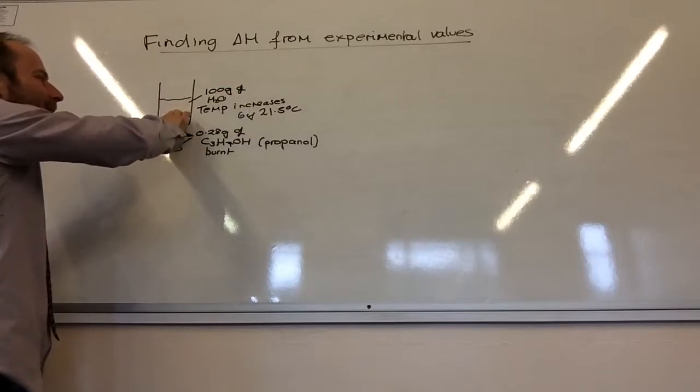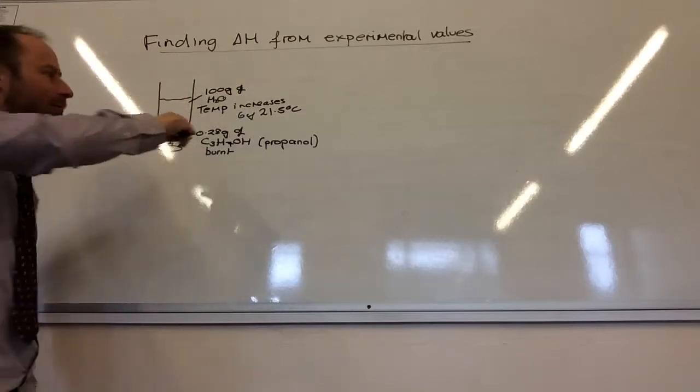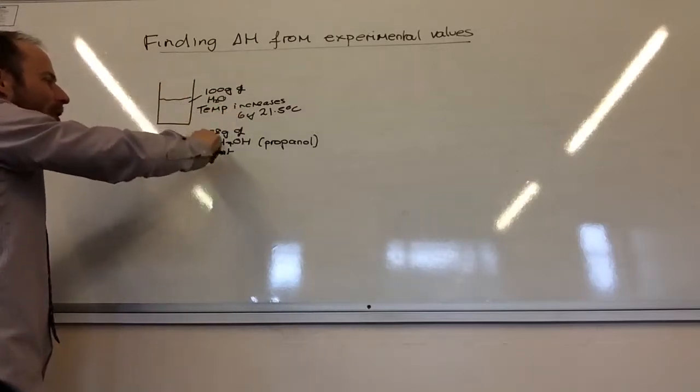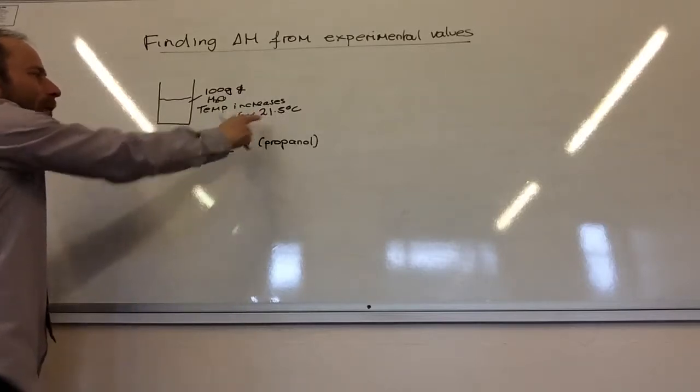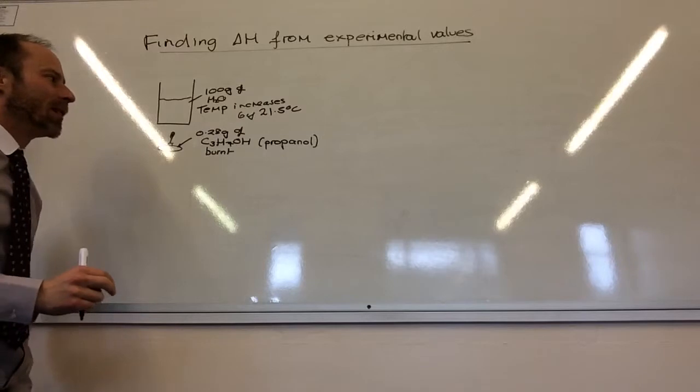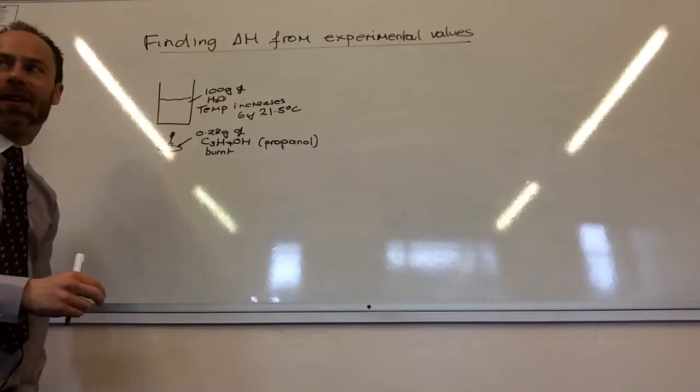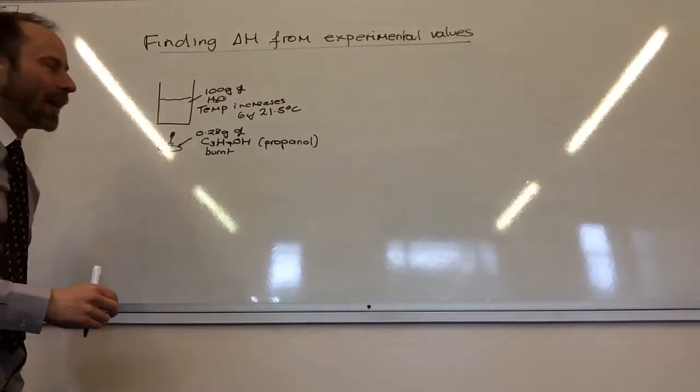I've got 100 grams of water in here. In like a can, I burn 0.28 grams of propanol. It heats the water up by 21.5 degrees C. And I need to find delta H from that.